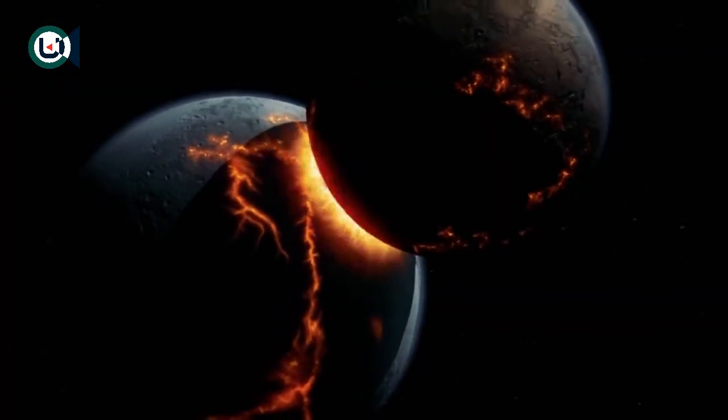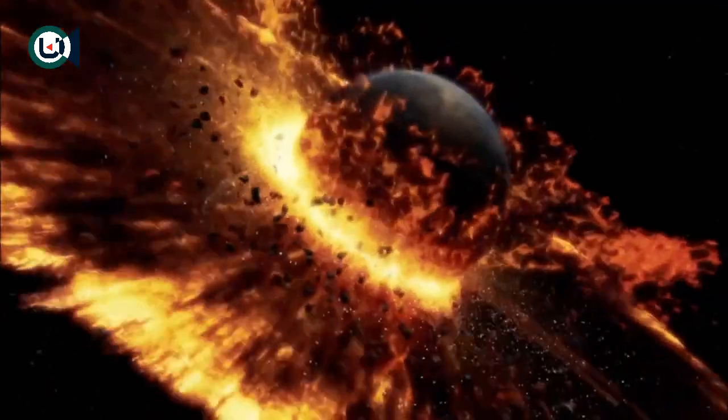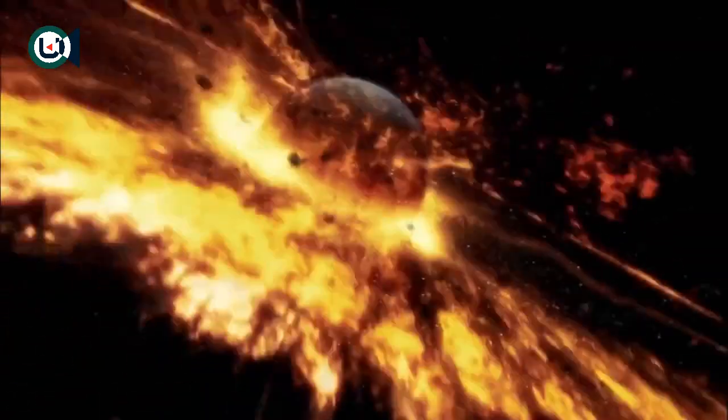In the beginning of our young solar system, an unknown planet or large celestial body collided with the Earth, and in that collision, the Earth's alignment and rotation were changed, and the Moon was formed.